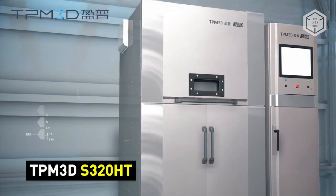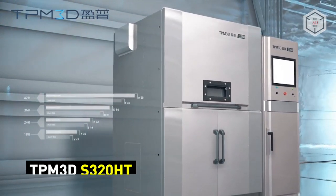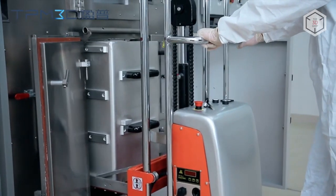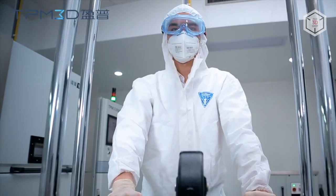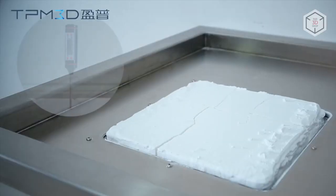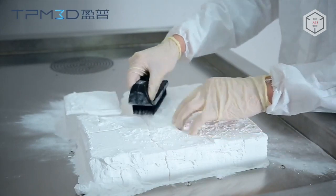The TPM 3D S320HT is an industrial grade machine designed to work with high temp materials such as peak. A large build volume of 320 by 320 by 380 millimeters and the minimum layer height of 60 microns are complemented by the maximum operating temperature of 350 degrees celsius. The S320HT is equipped with a replaceable build unit which can be removed to the cleaning station once the printing is over. The cleaning station comes with the printer and makes the post-processing of prints a lot easier.